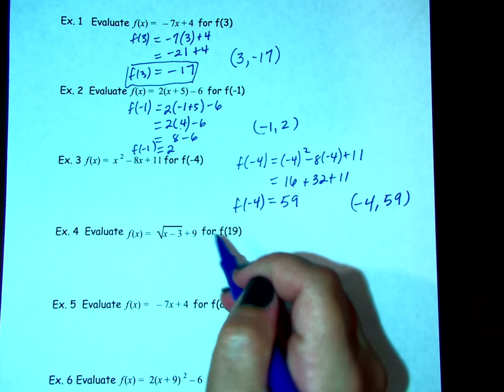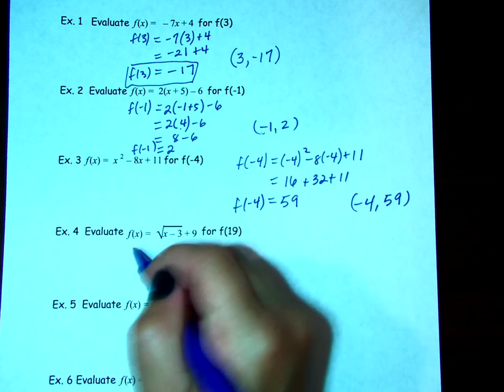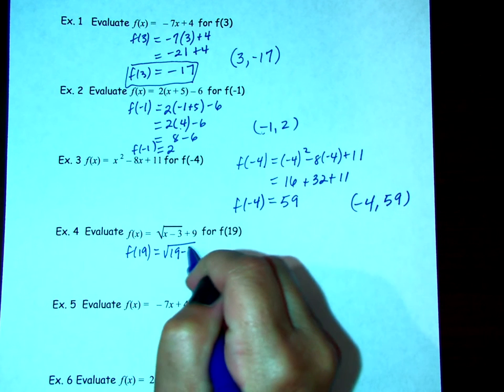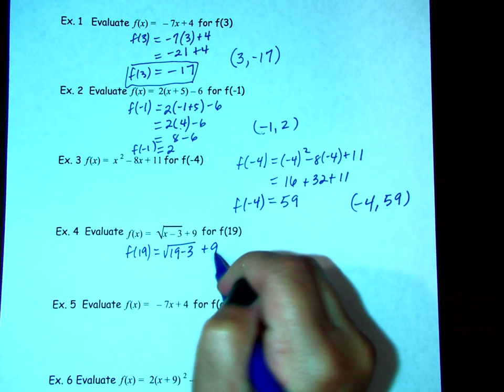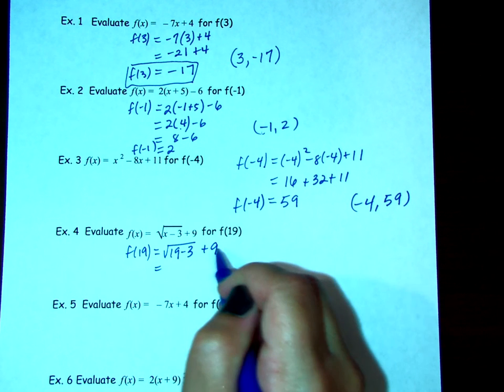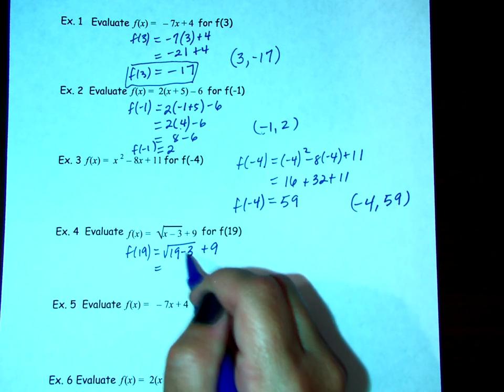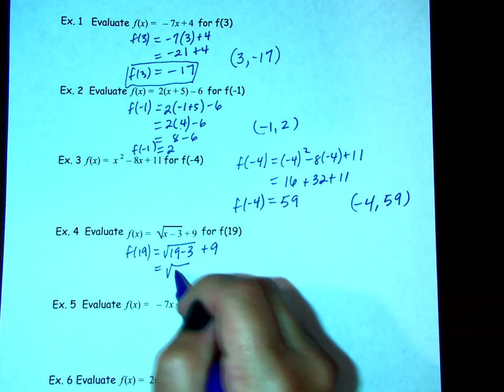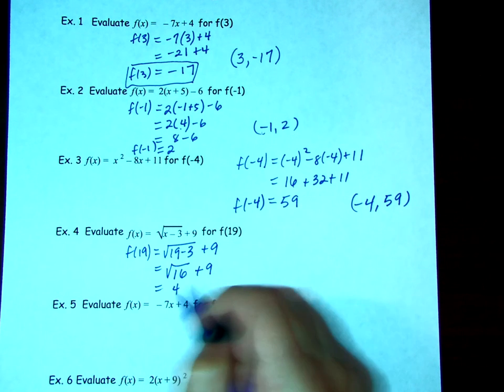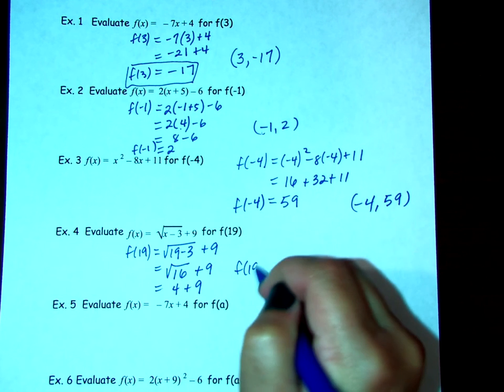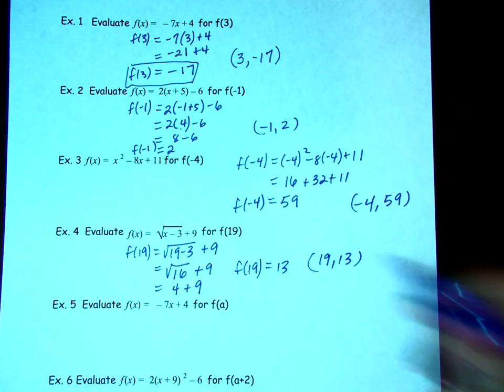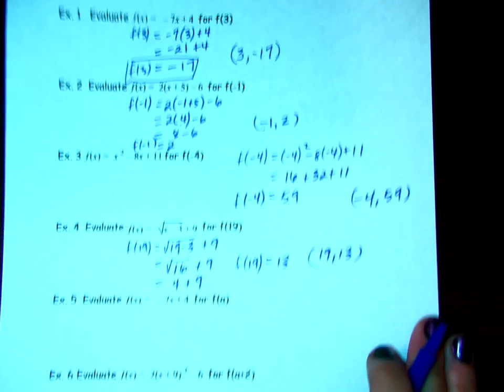On this next one, I'm plugging in a 19 to the square root function. So first do the square root first and then we'll add 9. So 19 minus 3 is 16. Square root of 16 is 4. I'm going to get f(19) equals 13. I could also write it as a coordinate pair of 19 comma 13.